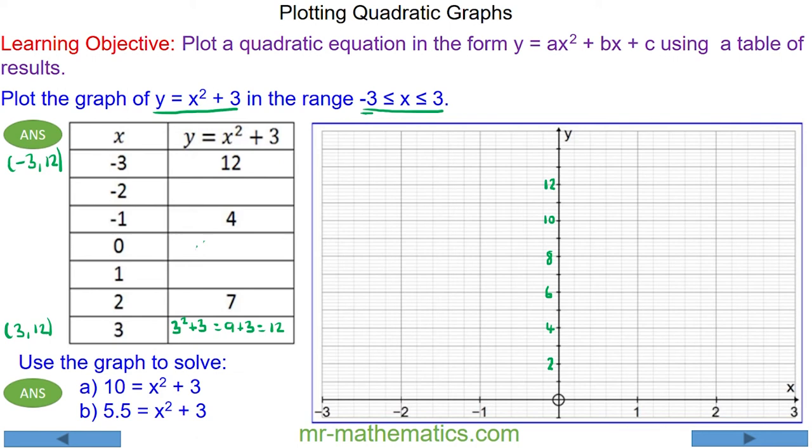And now we can plot the other coordinate pairs we've been given. So when x equals negative 1, y is equal to 4, because negative 1 squared plus 3 is 4. And 2 squared plus 3, 2 squared is 4, 4 plus 3 is 7.